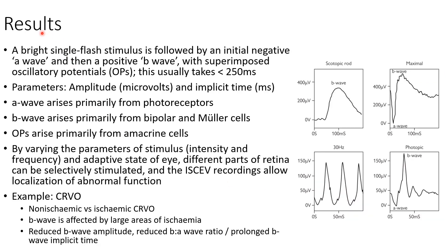Coming to the results of full-field ERG: a bright single flash stimulus is followed by an initial negative A wave, as you can see in this picture, and then a positive B wave. There are superimposed oscillatory potentials. This usually takes less than 250 milliseconds. The parameters assessed are amplitude in microvolts and implicit time in milliseconds of these waves. The A wave primarily arises from photoreceptors, the B wave primarily from bipolar and Müller cells, and the oscillatory potentials primarily from amacrine cells.